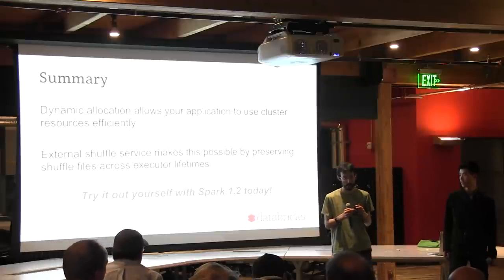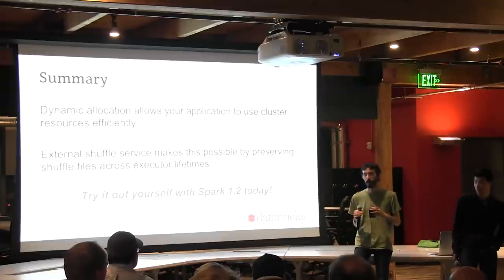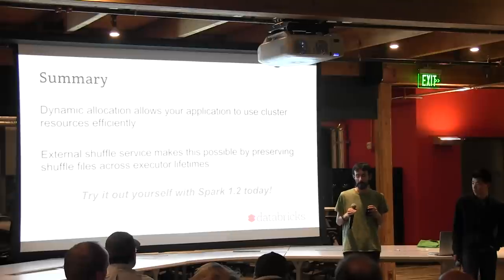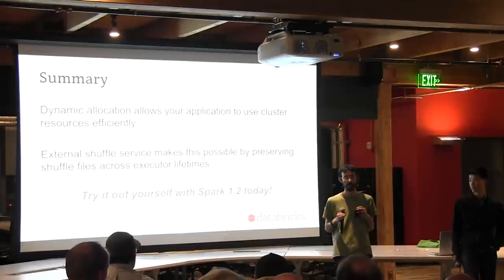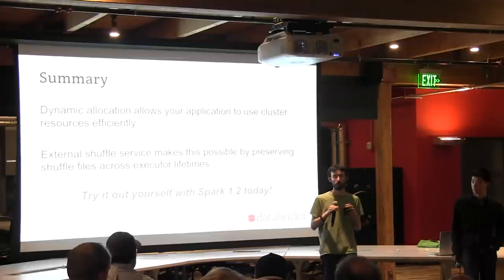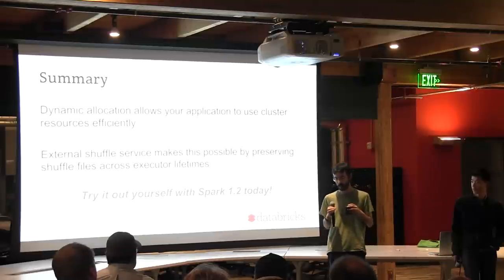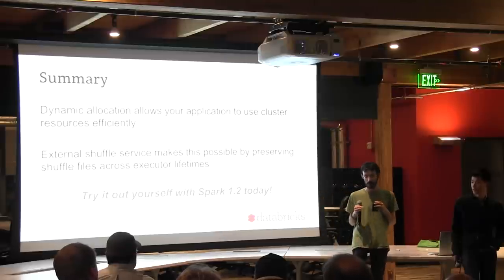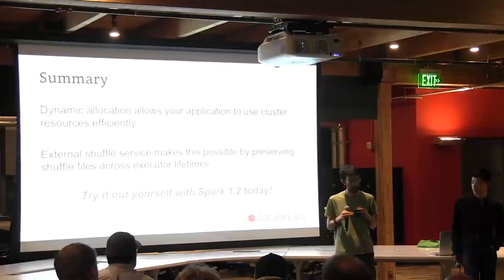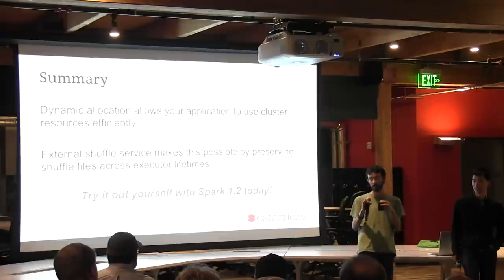Regarding streaming integration: there's actually a problem, because streaming often has a long-running receiver task that constantly receives data and never makes the executor idle. So for that use case, dynamic allocation as it stands in 1.2 isn't sufficient. We do want to integrate with streaming better. The second question about whether tasks get scheduled on the same machine — for streaming that's the common case, and we don't have a complete answer yet.